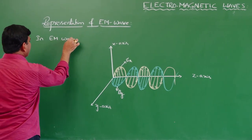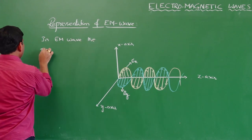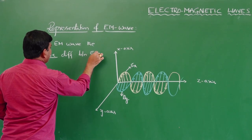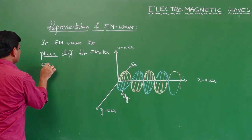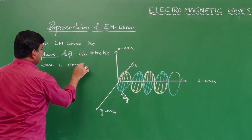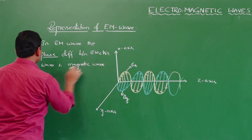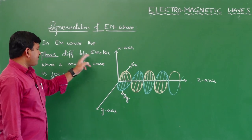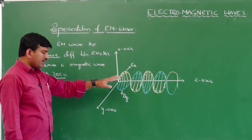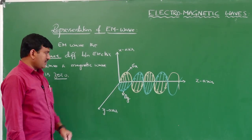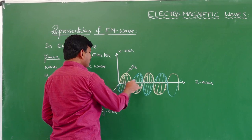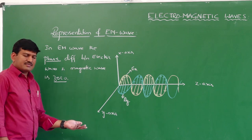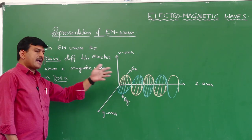There is no phase difference between the electrical wave and magnetic wave in an electromagnetic wave. In an EM wave, the phase difference between the electric wave and magnetic wave is 0. They are perpendicular to each other, but they are in phase. Their time periods are the same, so the phase difference is 0. Electrical wave is in phase with magnetic wave — this is a very important point.